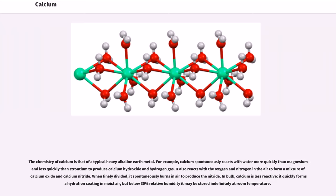The chemistry of calcium is that of a typical heavy alkaline earth metal. For example, calcium spontaneously reacts with water more quickly than magnesium and less quickly than strontium to produce calcium hydroxide and hydrogen gas. It also reacts with the oxygen and nitrogen in the air to form a mixture of calcium oxide and calcium nitride. When finely divided, it spontaneously burns in air to produce the nitride. In bulk, calcium is less reactive. It quickly forms a hydration coating in moist air, but below 30% relative humidity it may be stored indefinitely at room temperature.